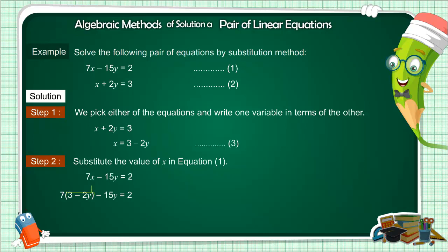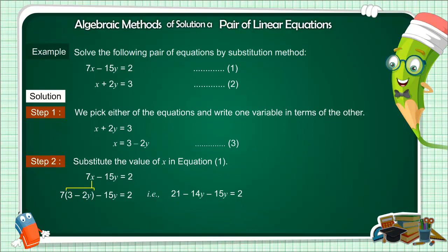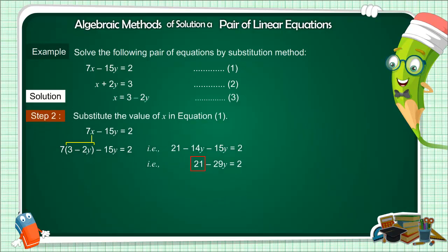The first equation is 7x minus 15y equals 2. Putting the value of x: 7 into (3 minus 2y) minus 15y equals 2. That is 21 minus 14y minus 15y equals 2. That is 21 minus 29y equals 2. Moving 21 to the other side, the equation is minus 29y equals 2 minus 21. That is minus 29y equals minus 19. Minus and minus cancel, so the value of y is 19 by 29.